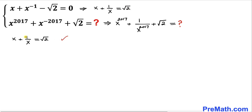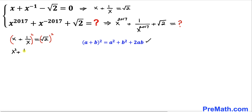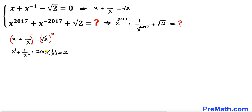Let's take a square on both sides. Recalling the identity (a plus b) whole squared, our equation becomes x square plus 1 divided by x square plus 2 times x times 1 divided by x equals to 2 on the right hand side, since the square and square root undo each other. The x and 1 divided by x cancel each other out, leaving x square plus 1 divided by x square plus 2 equals to 2.